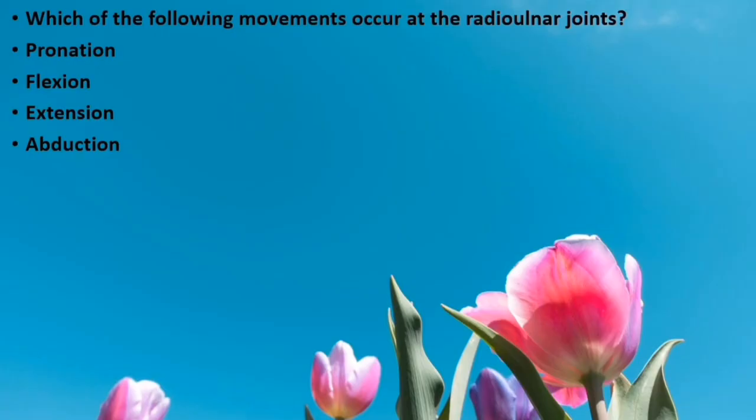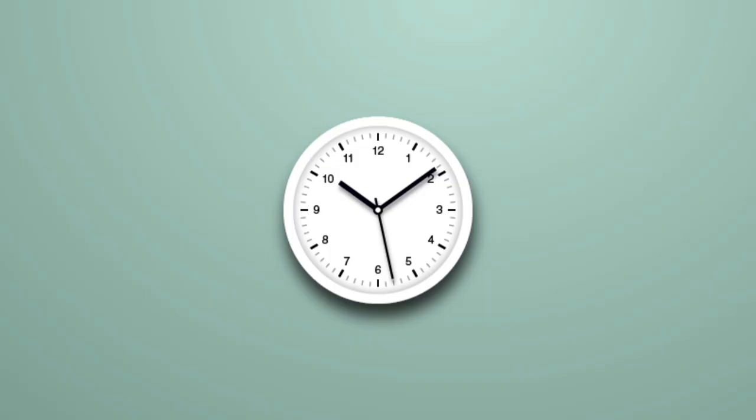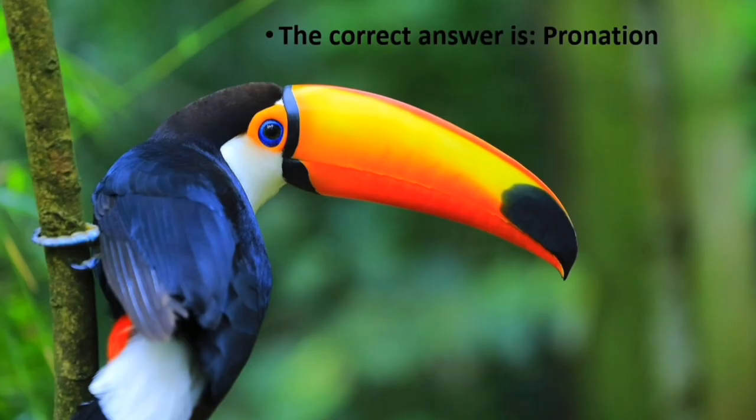Quiz: Which of the following movements occurs at the radio ulnar joints? Pronation, flexion, extension, or abduction? The correct answer is pronation.